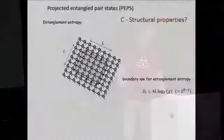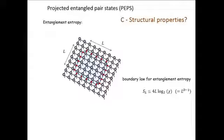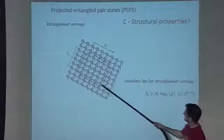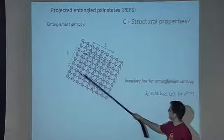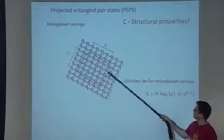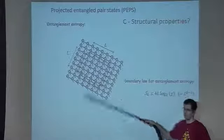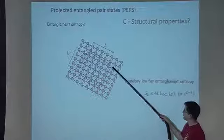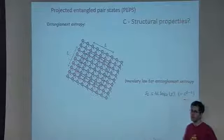For the entanglement entropy of a region of size L×L, it's very simple to get an upper bound representing the area law. By construction, if we try to split the wave function of an L×L region, we have to cut a number of bond indices proportional to the size of the boundary of the region. If the region is L×L, the boundary size is proportional to L - and there we have it. This is the area law.